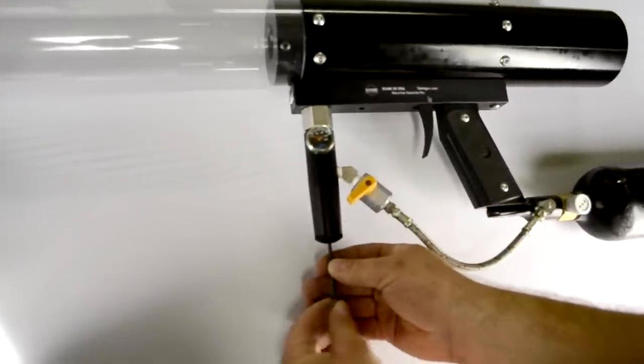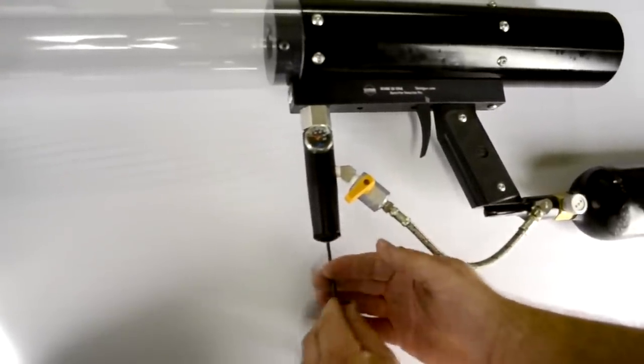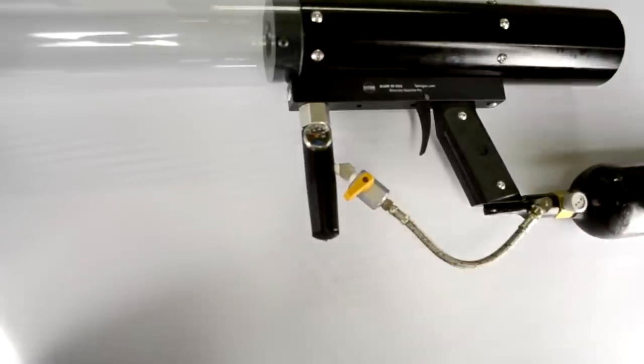Then taking our eighth inch allen key we'll turn the screw on the reg counterclockwise, backing off all the tension.